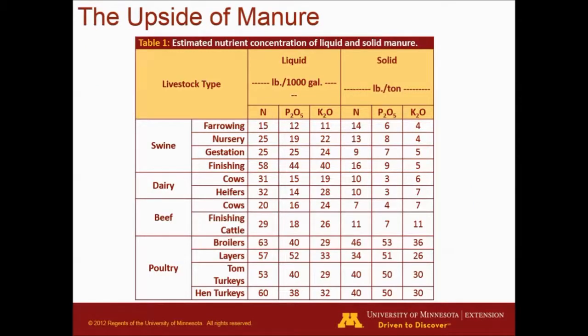The upside of manure is the nutrient content. Different livestock types and different growing stages are going to provide manure in terms of nitrogen, phosphorus, and potassium, so we have many nutrients being provided. There is going to be quite a bit of variability depending on the growing stage or the livestock type. Not all animals are the same — swine and poultry, for example, are monogastric animals, while dairy and beef are polygastric or ruminants, so they're going to have different nutrient contents.